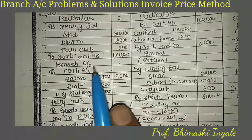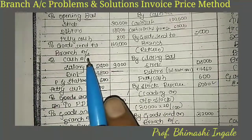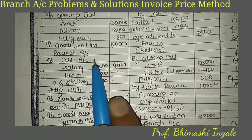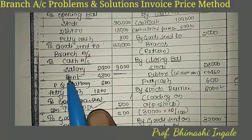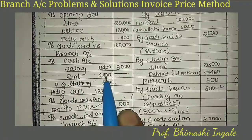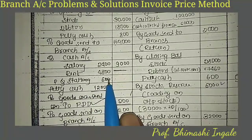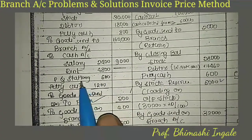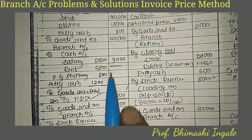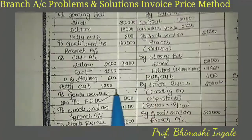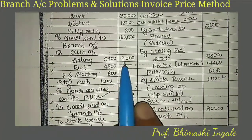Expenses paid by head office are recorded: rent 2,400, salary 4,800, printing and stationery 600. Total expenses amount to 9,000, with petty cash expenses of 1,200.